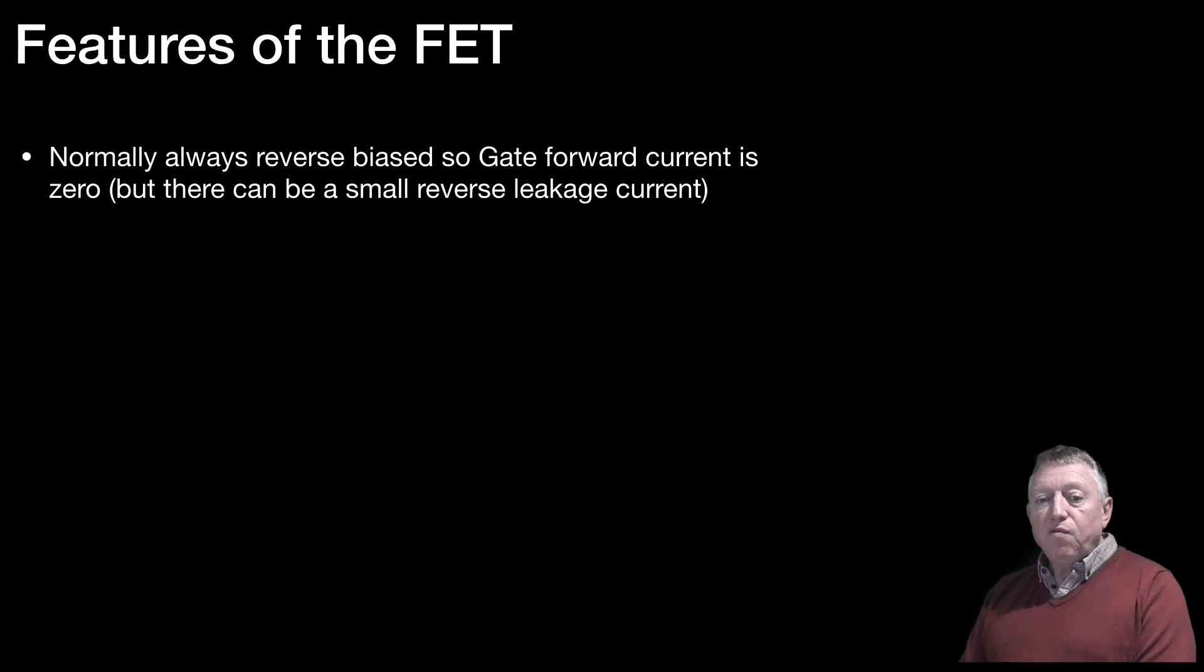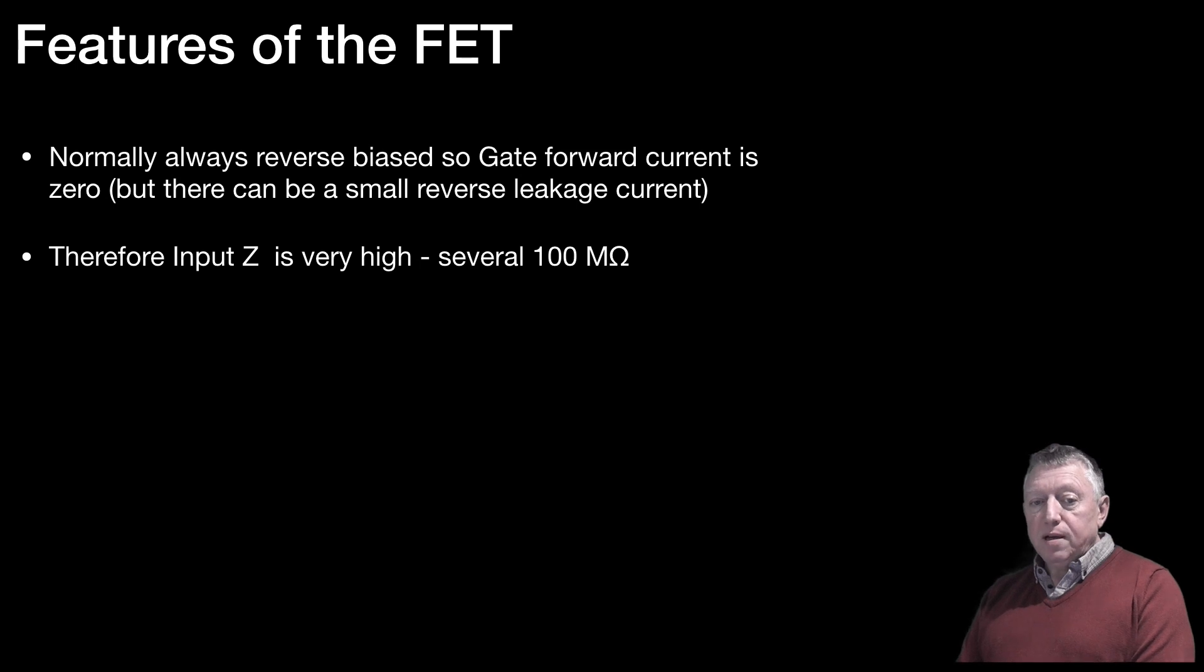So, the features of the FET. First of all, it's normally reverse biased, so gate forward current is zero. But there can be a small reverse current leakage. So, the input impedance is very high, several hundred megaohms.